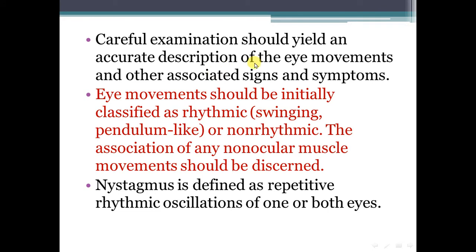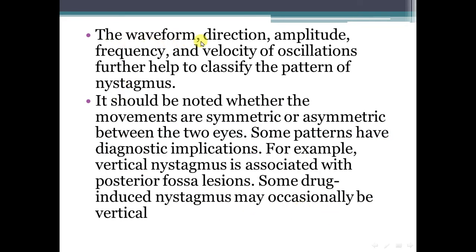Careful examination should yield an accurate description of the eye movements and other associated signs and symptoms. Eye movement should be initially classified as rhythmic, swinging, pendulum-like, or non-rhythmic. The association of any non-ocular muscle movement should be discerned. Nystagmus is defined as repetitive rhythmic oscillation of one or both eyes. Wave form, direction, amplitude, frequency, and velocity of oscillations further help to classify the pattern of nystagmus.